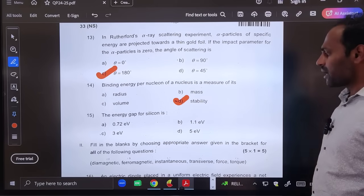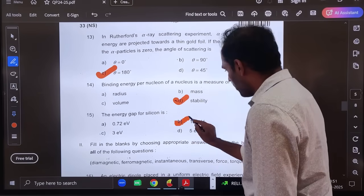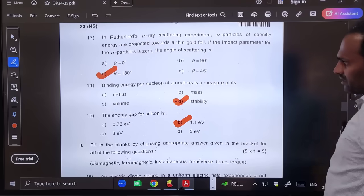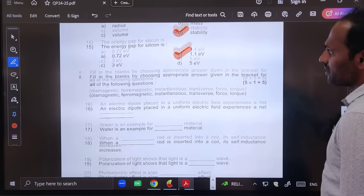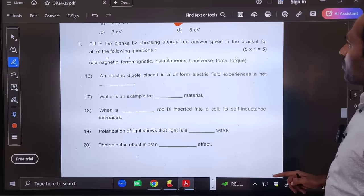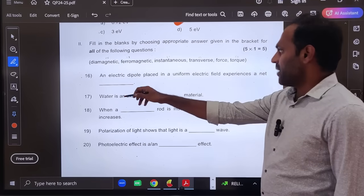The energy gap of silicon is 1.1 electron volt. So that is all about the MCQs. We will go for the fill in the blanks now. Fill in the blanks by choosing appropriate answer.